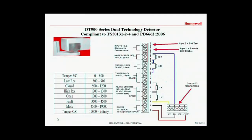If the detector, like a Honeywell DT900 series, has the separate mask, trouble, tamper and alarm outputs, then 1K is a closed. In an alarm condition we read 2K. In a fault condition we read 4K. And in a mask condition we read 13K.